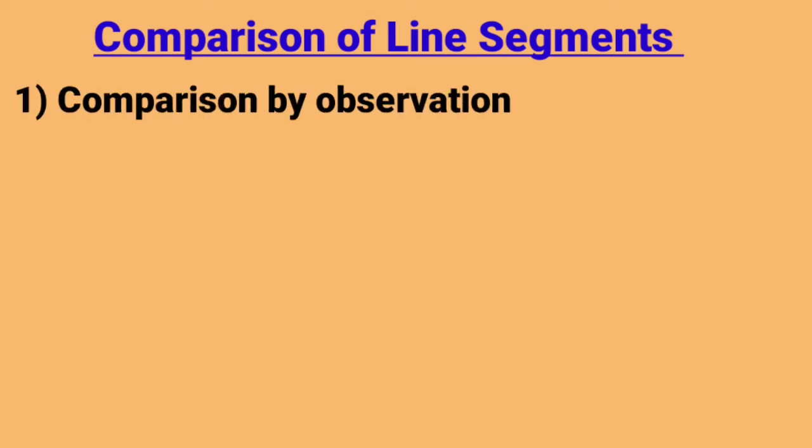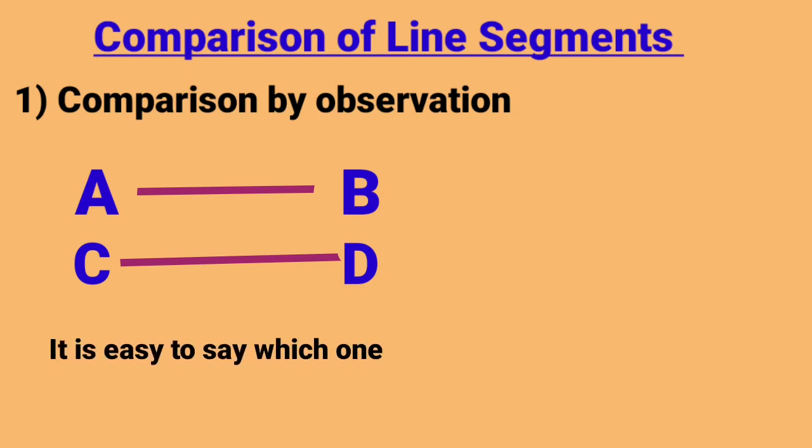There are different methods to compare two line segments. The first method is comparison by observation. If two line segments are given parallel to each other, then it is easy to say which one is longer.